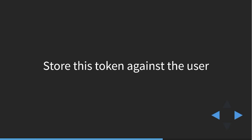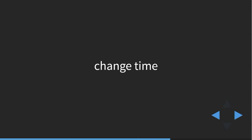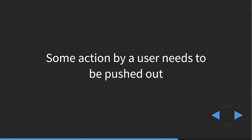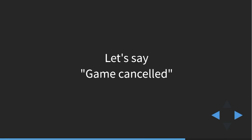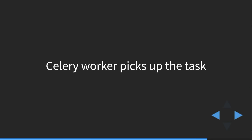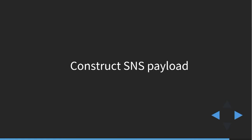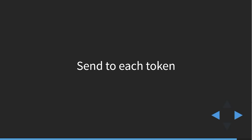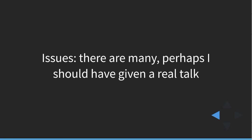We store the SNS token against the user in our database. When someone makes a change on the system — say someone's cancelled a game — the users at the game should have their phones go 'bing'. The view post initiates an asynchronous task to send the push notification. The Celery worker picks up that task, queries the database to find all affected users, gets all the SNS tokens for those users, constructs the SNS payload, sends it to every token, and the phones go bing. There were many, many issues — maybe I should have done a full talk to cover them — but that's it.